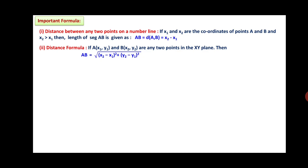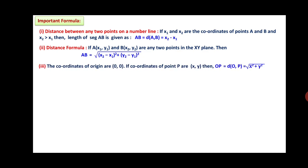Distance Formula: if A(x1, y1) and B(x2, y2) are any two points in the XY plane, then distance AB equals the square root of (x2 minus x1) squared plus (y2 minus y1) squared. The coordinates of the origin are (0, 0). If coordinates of point P are (x, y), then distance OP equals the square root of x squared plus y squared.